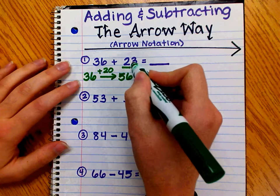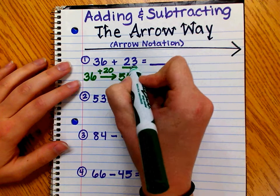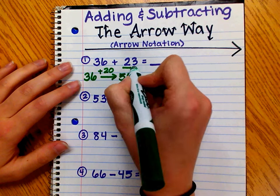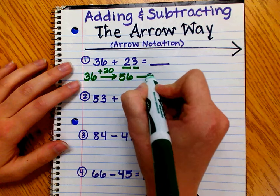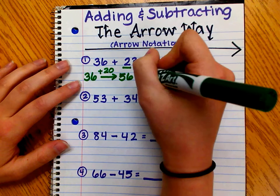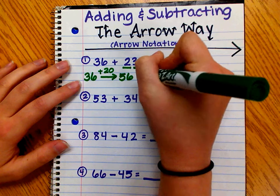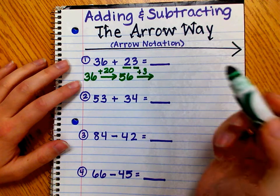Now that we have added the tens, we are going to add the ones. We have 56, and now we need to add the three ones. So I'm drawing another arrow, and I'm writing plus 3 to show that we are adding three more.